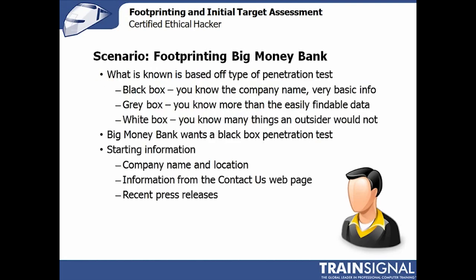For footprinting Big Money Bank, there are different types of attacks based on the information you get at the beginning: black box, white box, and gray box. These involve vastly different amounts of pre-knowledge. In many white box tests, you won't need much passive footprinting. In this case, Big Money Bank wants to know how attackers found so much information and gained access, so they want a black box penetration test.